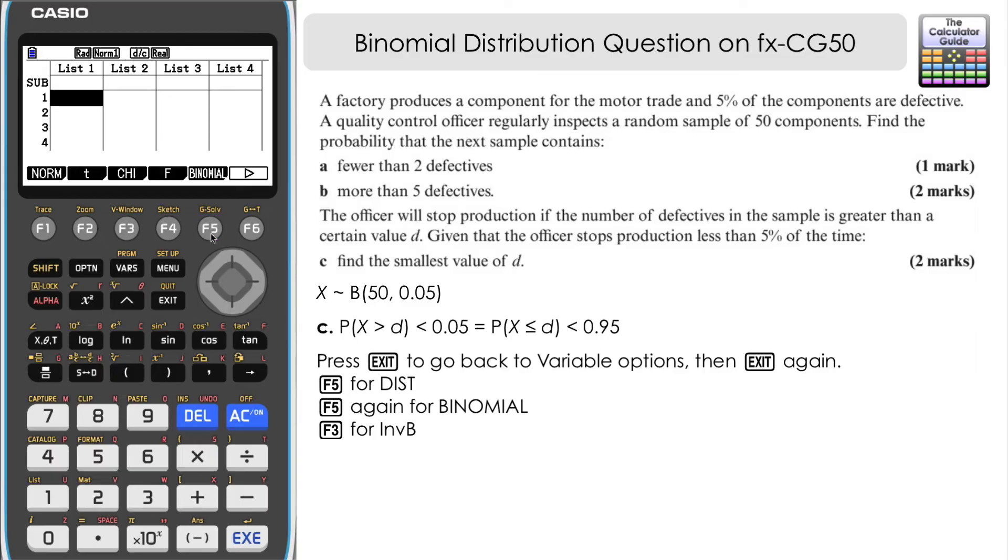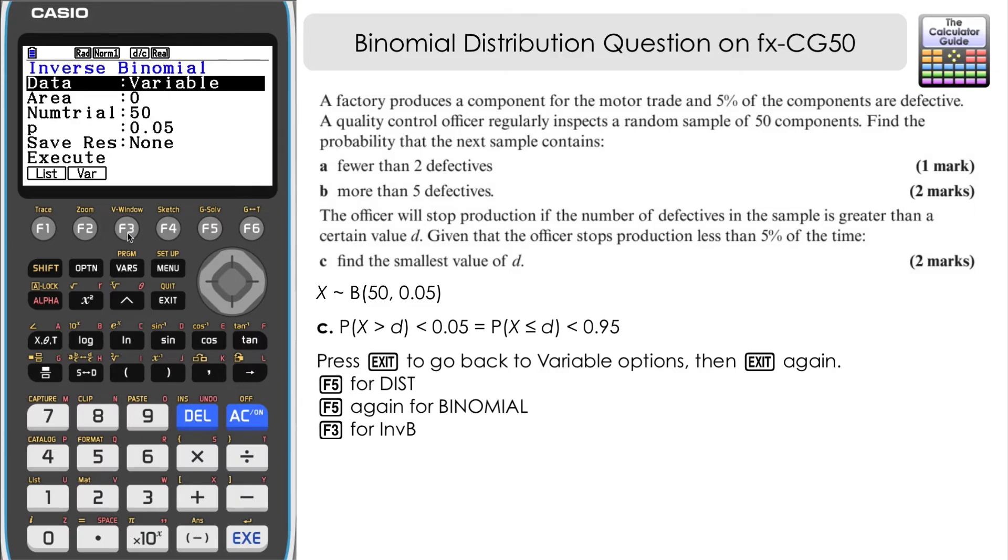So just exit from that and then exit from the variable page. If you just go back into distribution, F5 and binomial, F5 again, you can see that the third option here, F3, is inverse binomial. So if we press that, now you can see that N and P values are already there from what we inputted on the previous pages there.